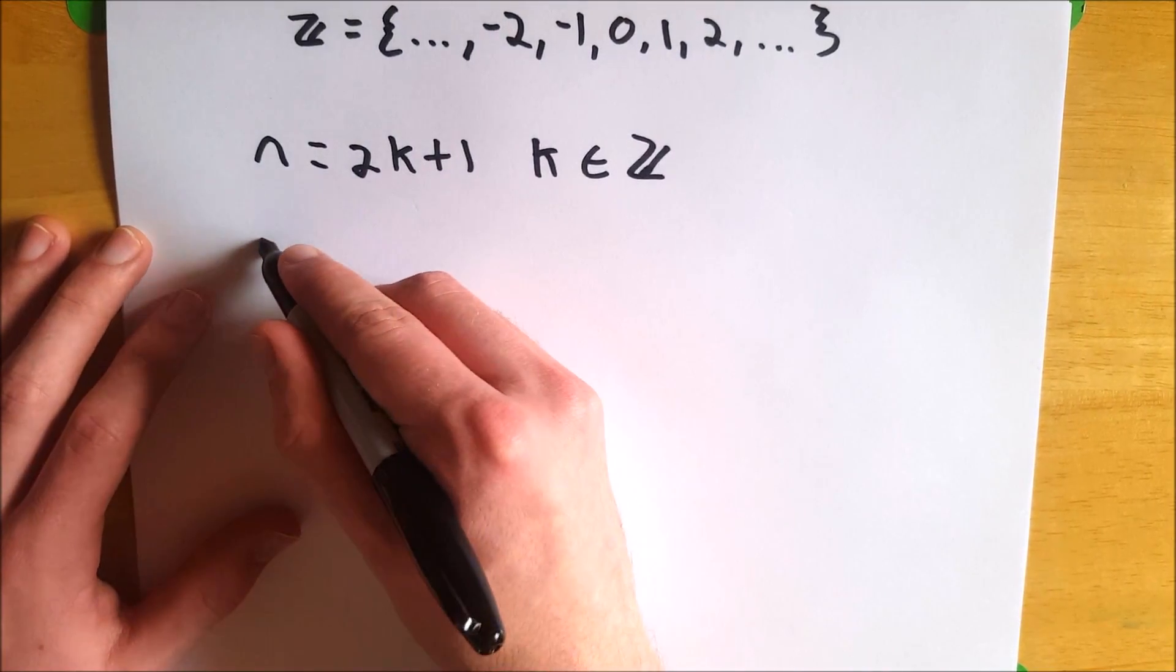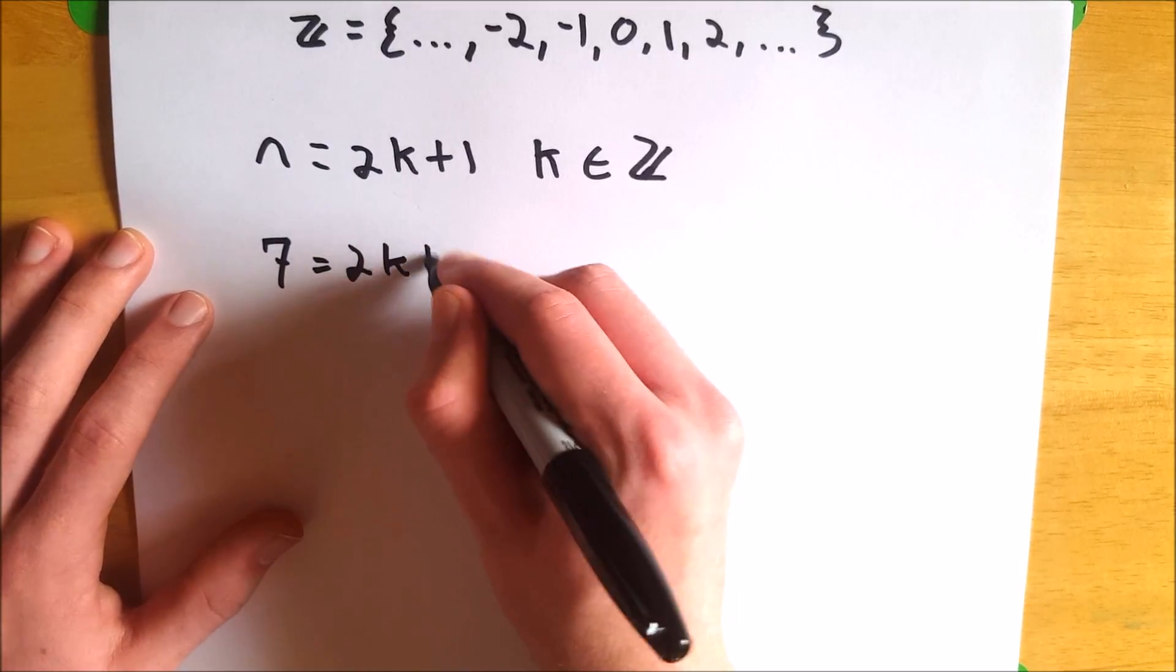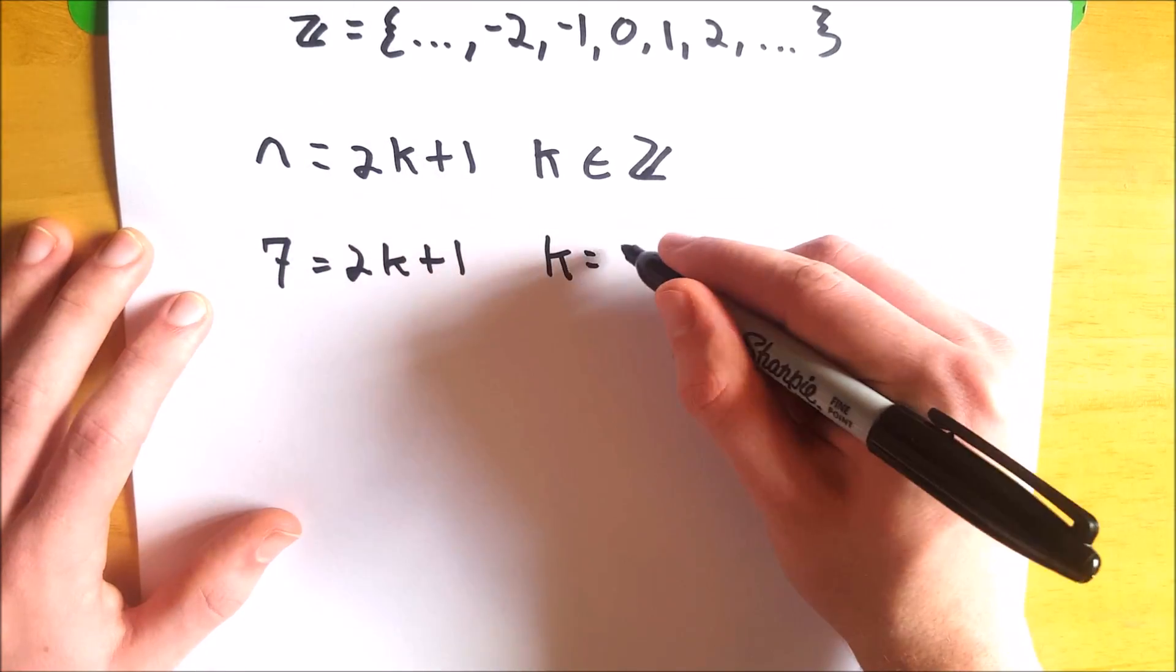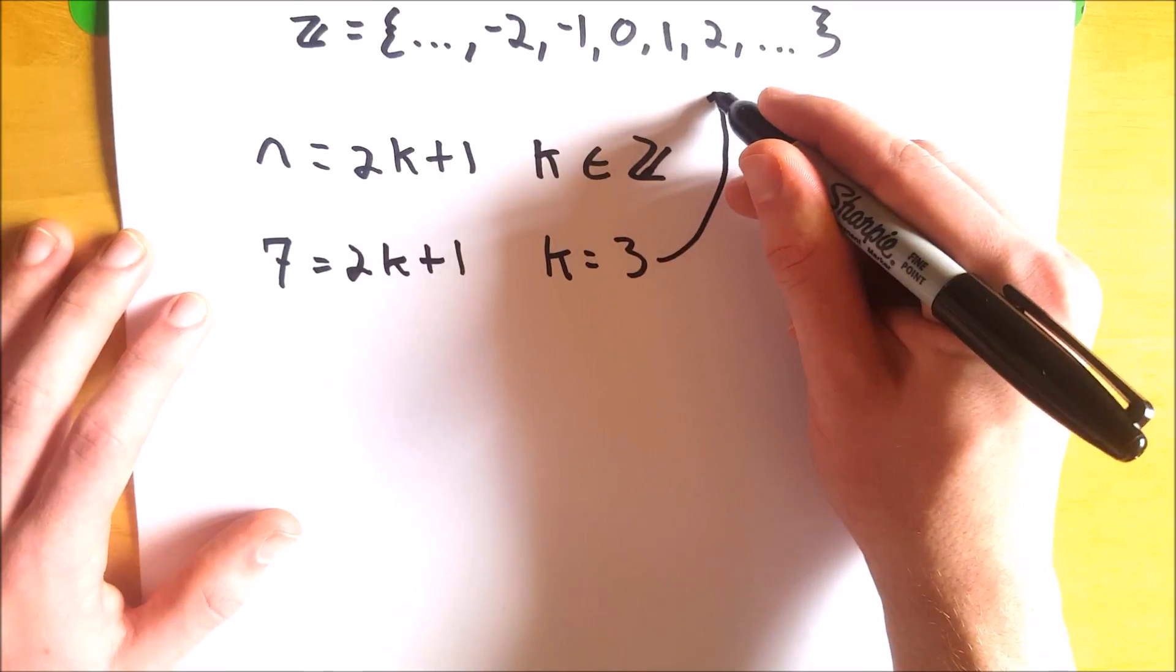Let's look at 7. 7 we know is an odd number. It equals 2k plus 1 for what value of k? That would be 3. k equals 3. 3 is an element of the integers.